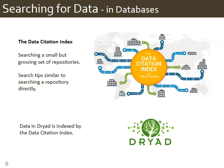For example, if you search in the Data Citation Index for 'earwigs,' you are likely to find the earwig data set from Dryad that you found earlier from your literature search. So search tips in the Data Citation Index are the same as those for searching in a repository directly: play with both broader and narrower terms, and use synonyms.